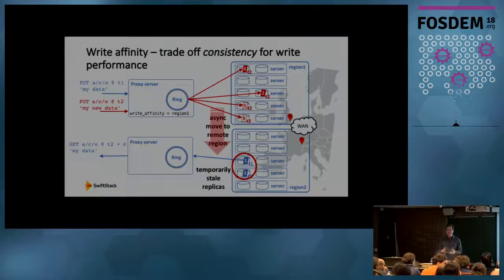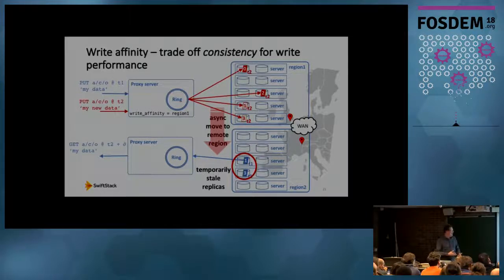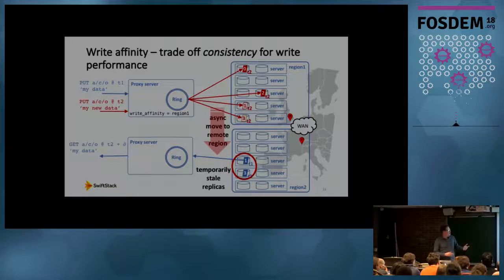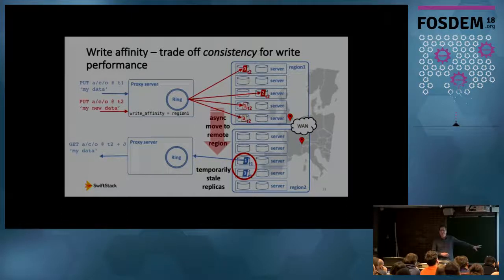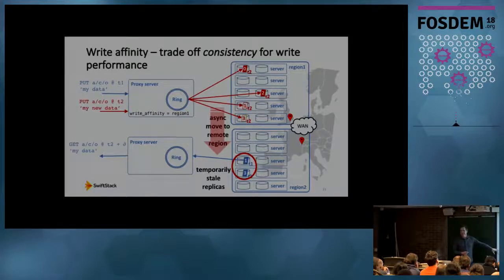With write affinity enabled, although all replicas are written to one region, data is still available in the other region — any read request during the window before async migration will be served by reading back across the WAN from region one. Once the async process completes, reads are served from the local region. We have no loss of availability, a temporary loss of dispersion, but full durability in the first region and hugely improved write performance. We are trading off consistency for write performance — there is a window where stale data may be read in the second region.